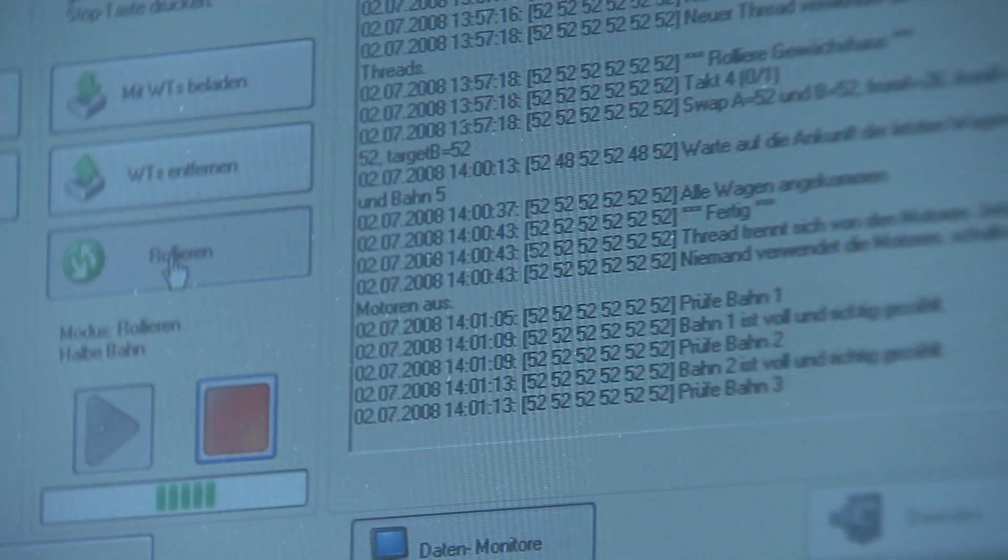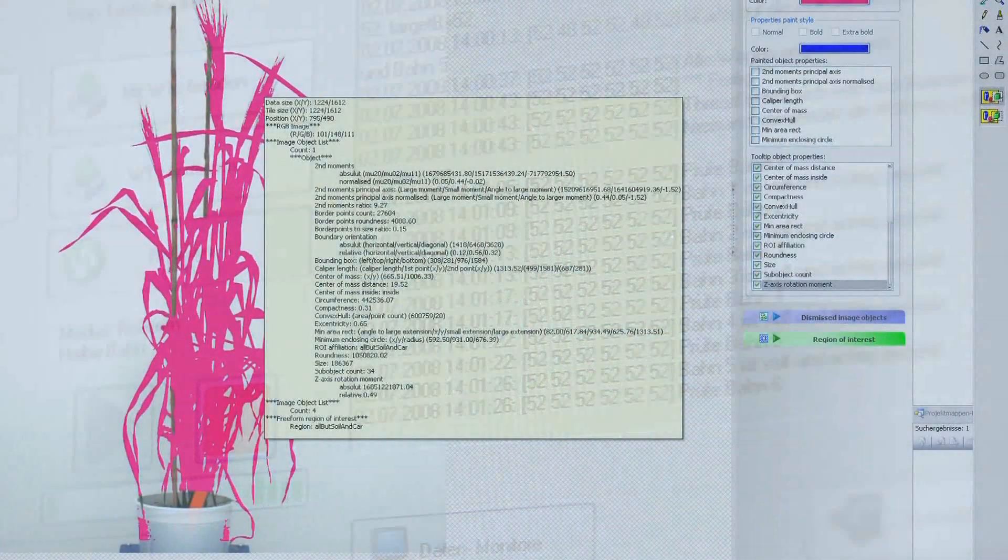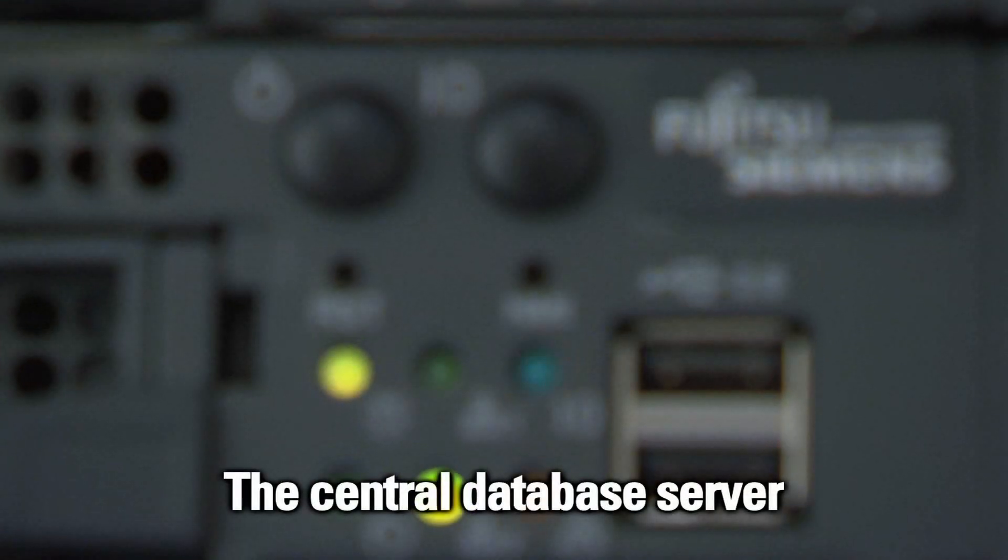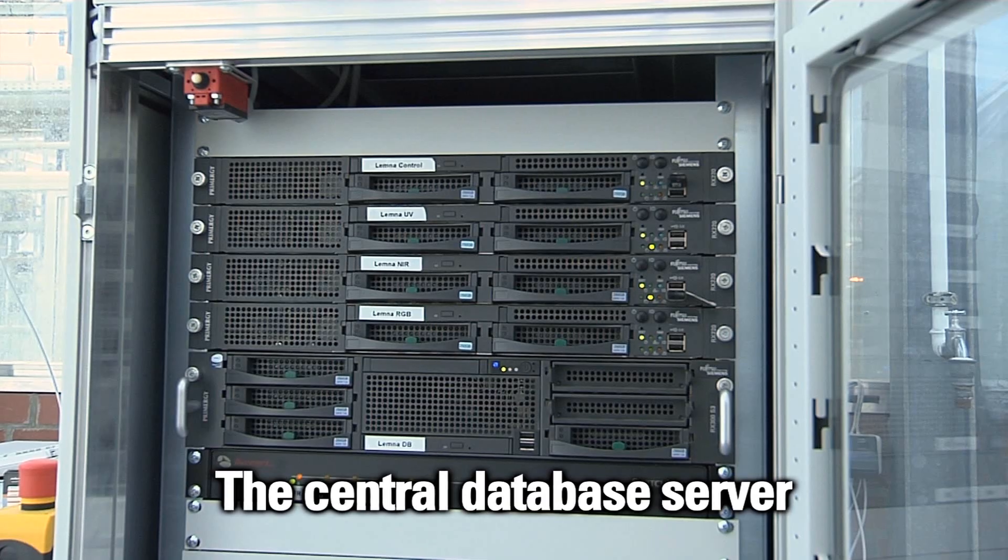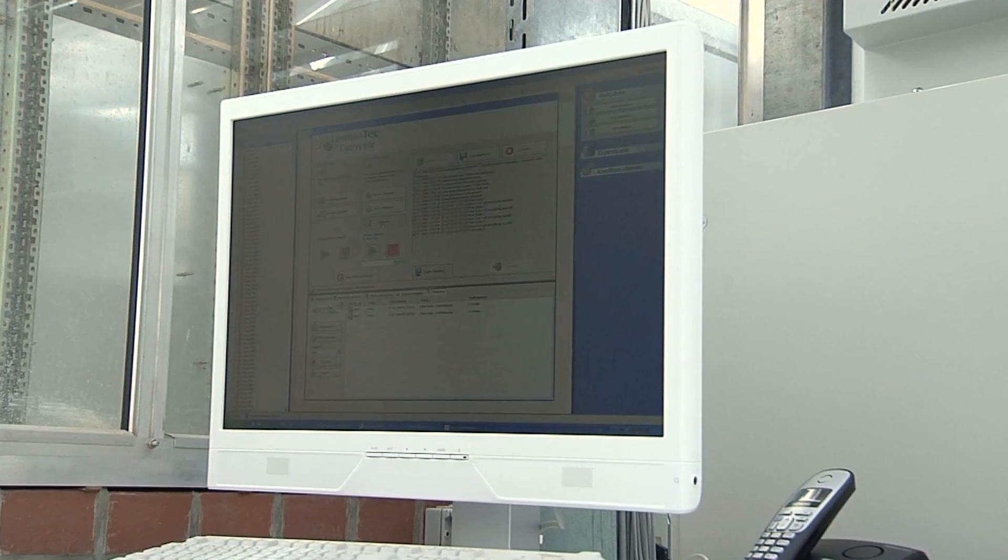All processed data are managed through a central database, the heart of all data management. Thousands of data points are produced for a whole growth period per plant and stored automatically in the fully integrated database. High-performance Siemens servers provide state-of-the-art data technology with more than 40 terabit data handling.